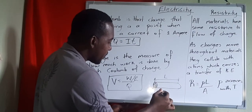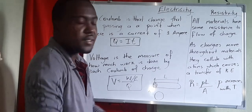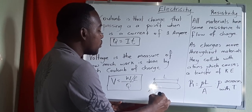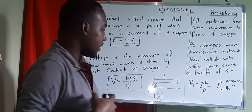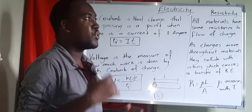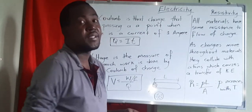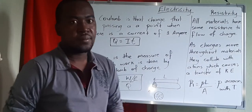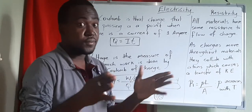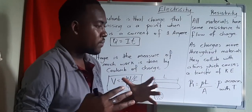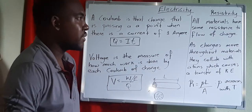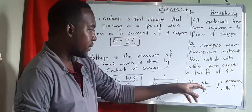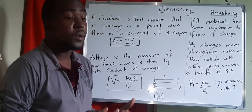Increasing the area means you're increasing the atoms that the charges will encounter while passing through the material, which actually slows them down more. Different materials have their own resistivity values — for example, copper has a different resistivity than iron because their atoms are different sizes and pack differently, so the atom size causes the resistivity and resistance values to differ.